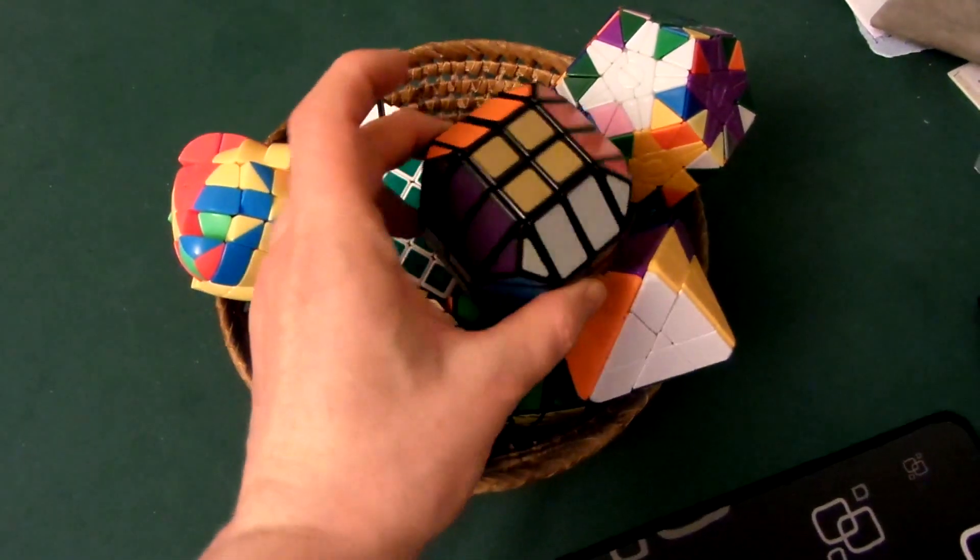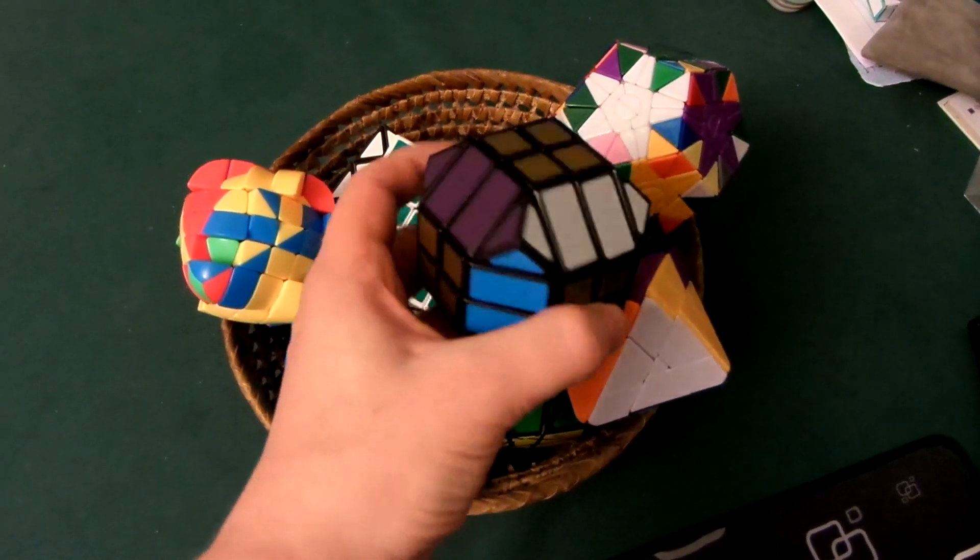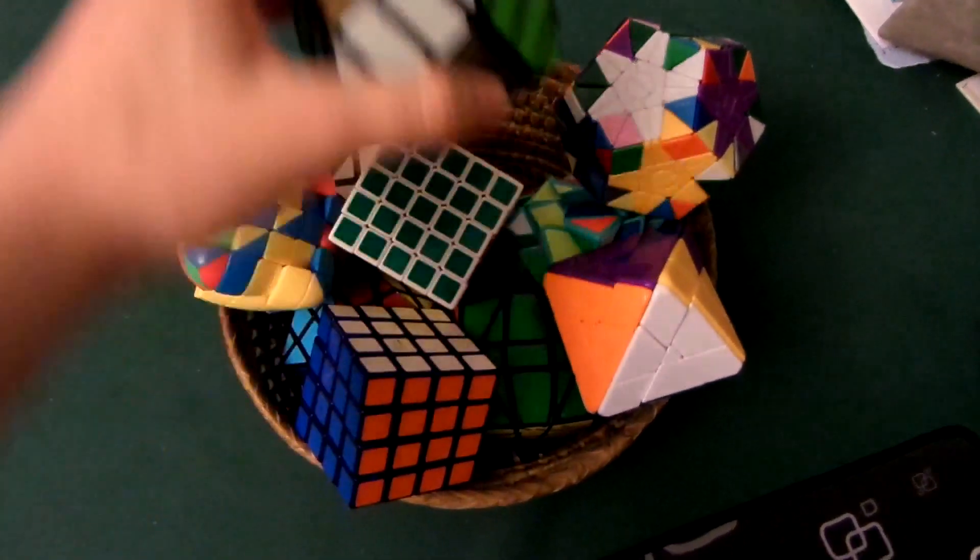You can see this is a Cane Ball, and you don't even need to solve the centers on this one. It's a fairly trivial 4x4 shape mod.